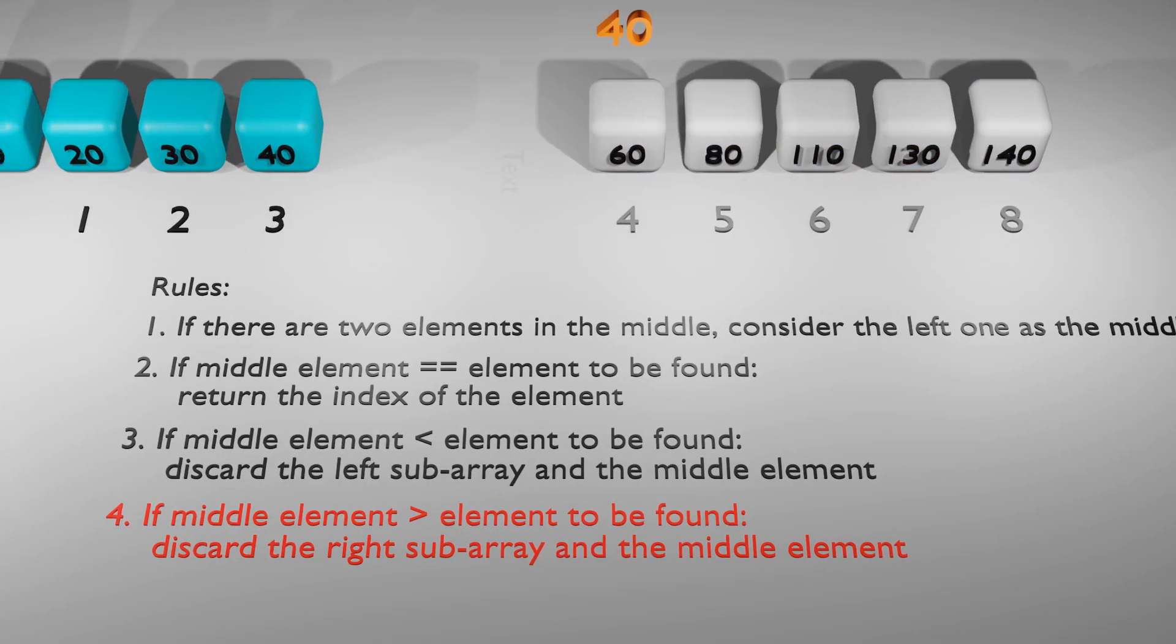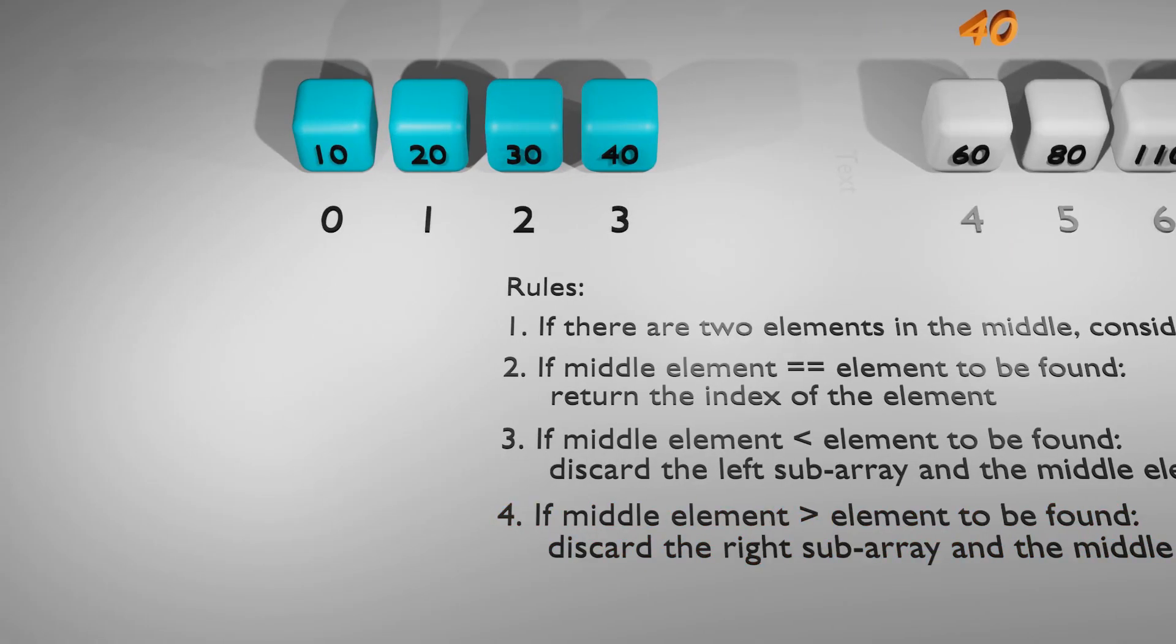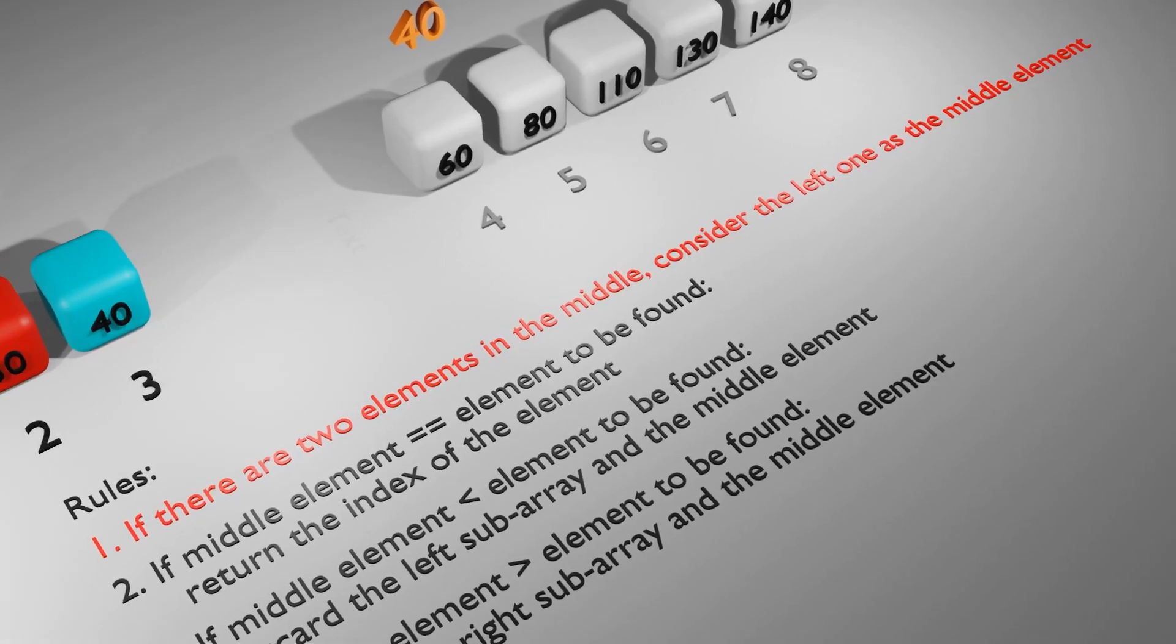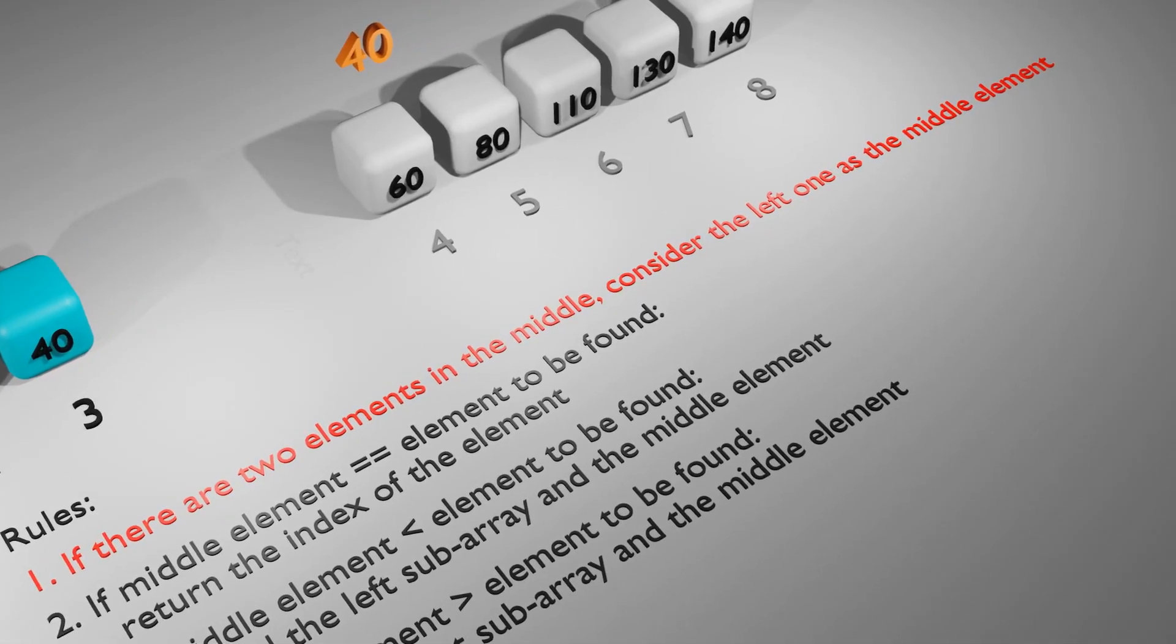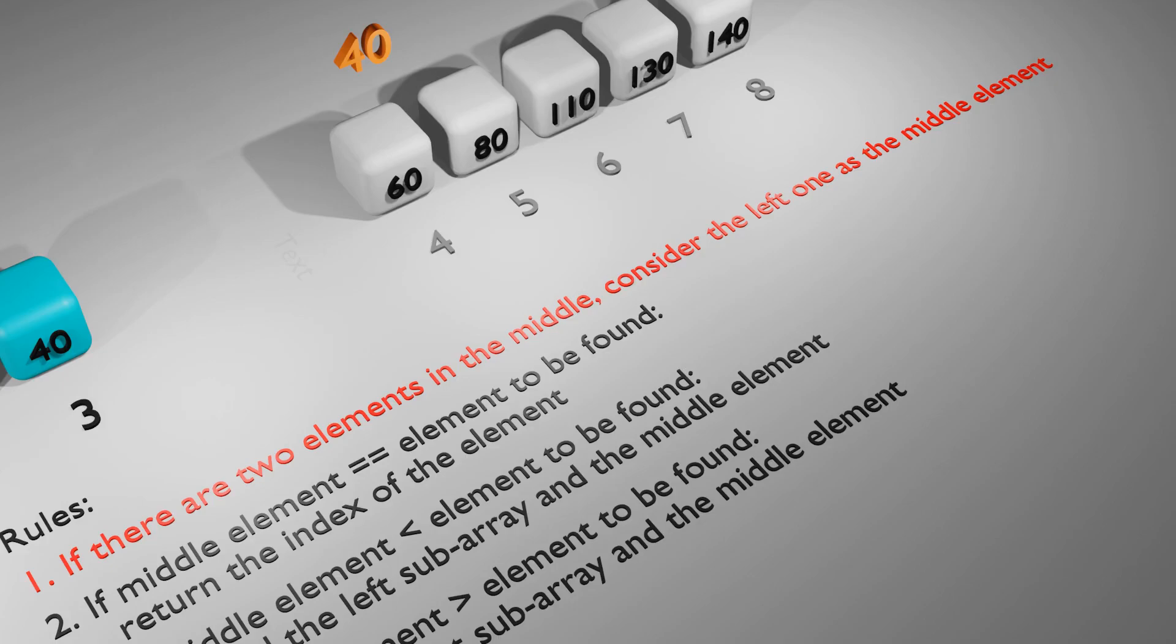So we discard the right sub array and the middle element and focus on the left sub array, where there is a chance of finding the element we're looking for. We repeat the process to find the middle element once again. However, since the new array has even number of elements, we have two elements in the middle. Rule number one applies in this case, which states that if there are two elements in the middle, we consider the left one as the middle element and proceed.